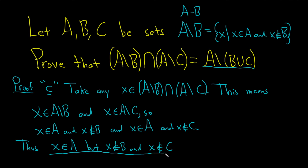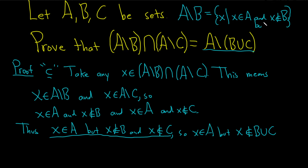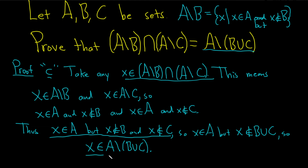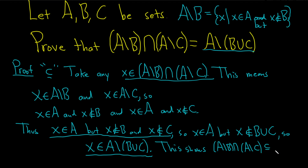So we have this statement. This means that x is in A, and since x is not in B and not in C, it's not in the union. This means that x is in A set minus B union C. We started with an element in the left set and showed it's in the right set. So this shows that A minus B intersect A minus C is a subset of A minus B union C.